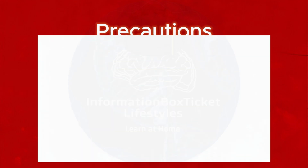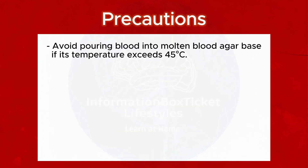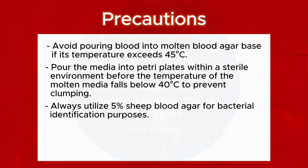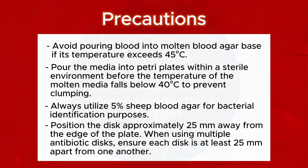Precautions: Avoid pouring blood into molten blood agar base if its temperature exceeds 45°C. Pour the media into petri plates within a sterile environment before the temperature of the molten media falls below 40°C to prevent clumping. Always utilize 5% sheep blood agar for bacterial identification purposes. Position the disc approximately 25 mm away from the edge of the plate. When using multiple antibiotic discs, ensure each disc is at least 25 mm apart from one another.